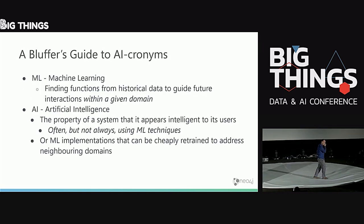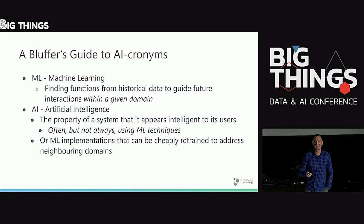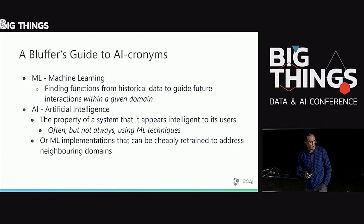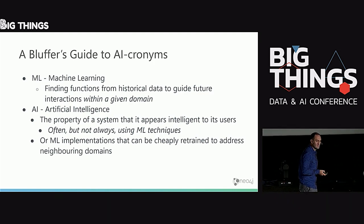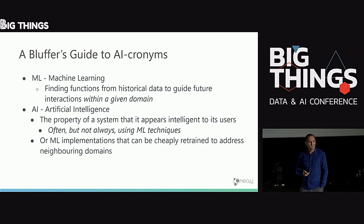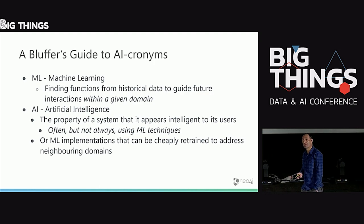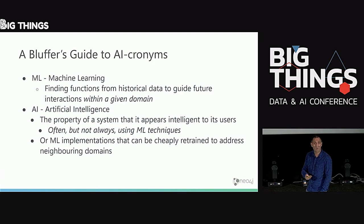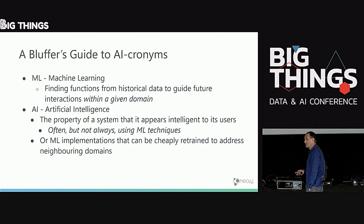So my Bluffer's Guide to AI acronyms. Stick with these definitions — they're a good set. ML, machine learning: where we find functions using historical data to guide future interactions within a given domain. AI is the property of a system that it appears intelligent to its users — often, but not always as we'll see in this talk, using machine learning techniques.